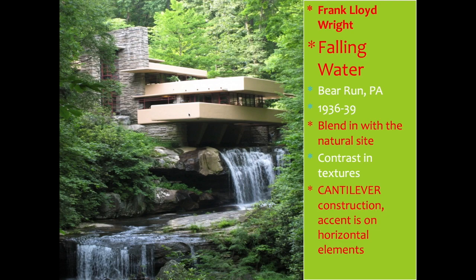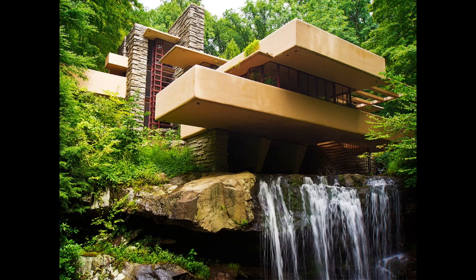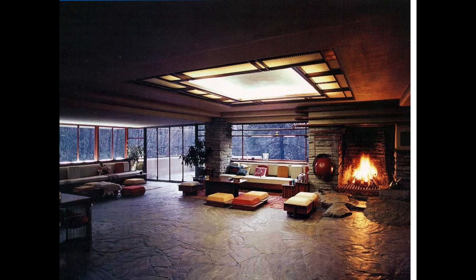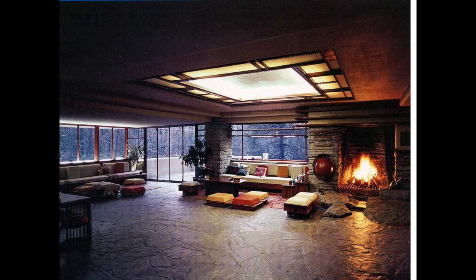The accent in Fallingwater is on the horizontal elements of the building. You can see the water below, the natural stone, and a color palette of natural colors and tones. When Frank Lloyd Wright created a building, he even created the furniture inside — he wanted everything to feel seamless. The fireplace with natural stone, large windows allowing natural light and views of the woods into the interior space — that's what the Prairie Style was all about.